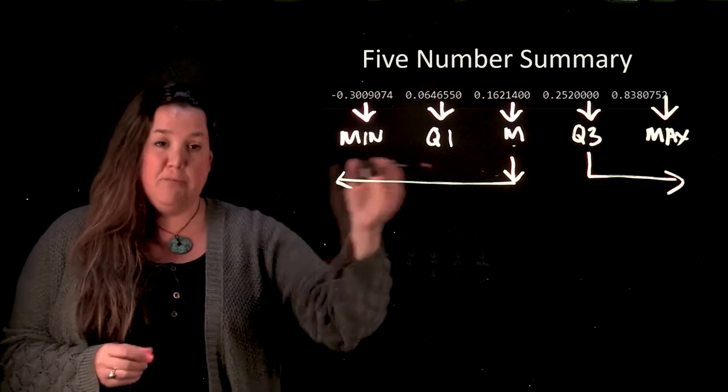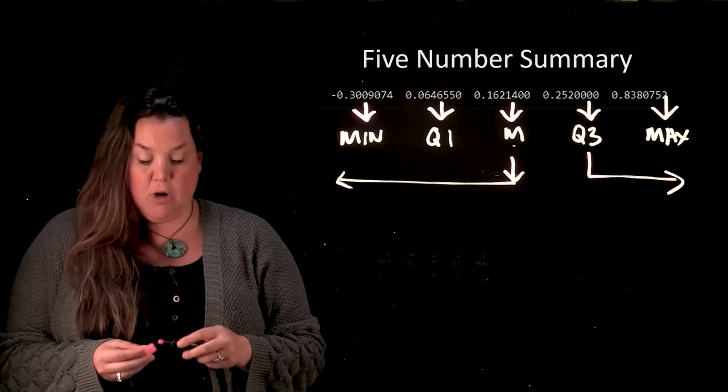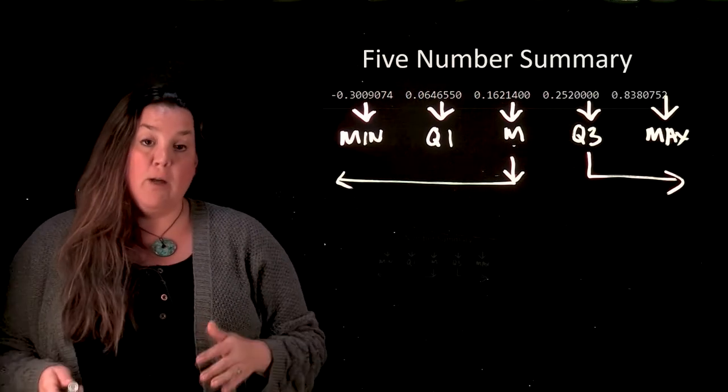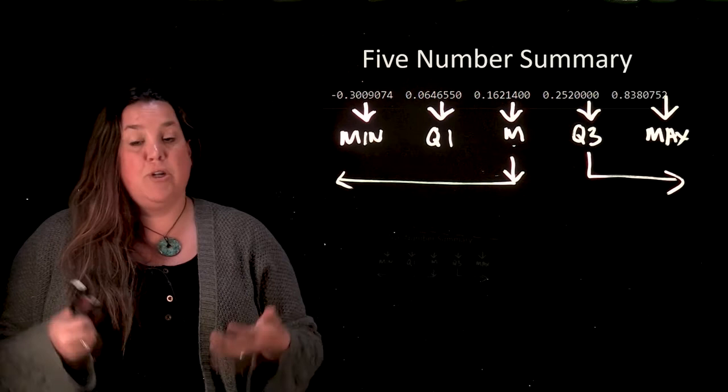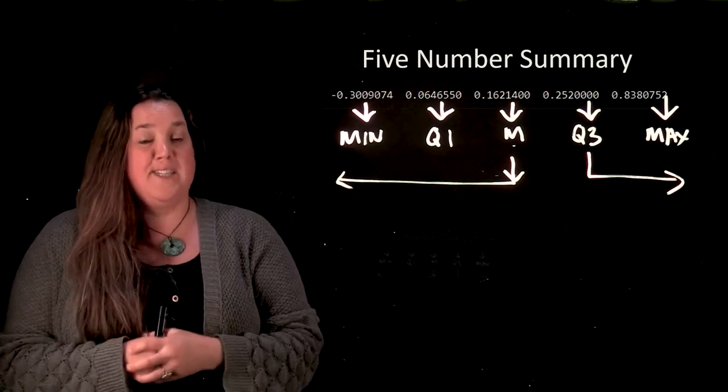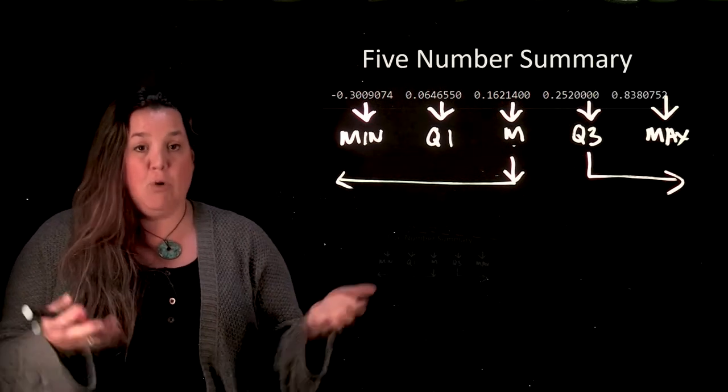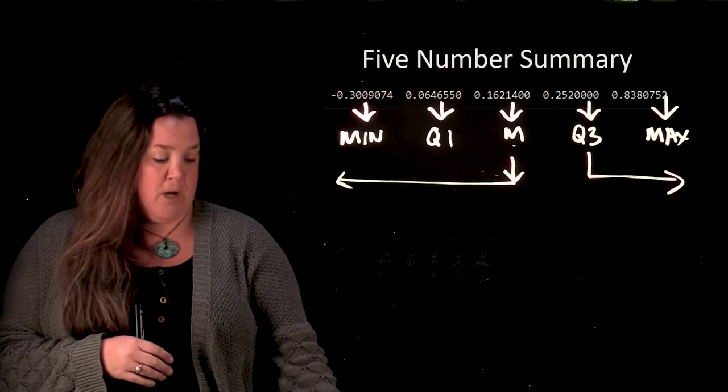So even though that wasn't labeled, because I know this is the five number summary, I know which of the measurements are coming for Q1 and which one is Q3, just because of where it's located in the table, but also because it has to be a number that's between the minimum and the median for Q1, just because numerically, that's how we would identify it.